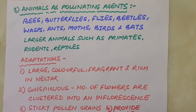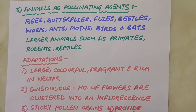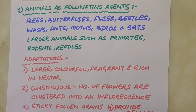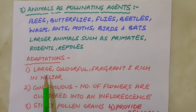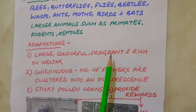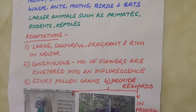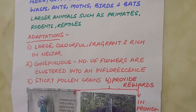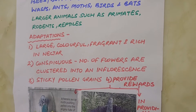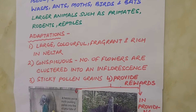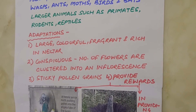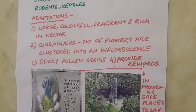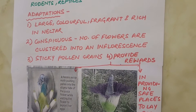Often, flowers of animal-pollinated plants are specifically adapted for a particular species of animal. Majority of insect-pollinated flowers are large, colorful, fragrant and rich in nectar. When the flowers are small, a number of flowers are clustered into an inflorescence to make them conspicuous. Animals are attracted to flowers by color or fragrance. The flowers pollinated by flies and beetles secrete foul odors to attract these animals.